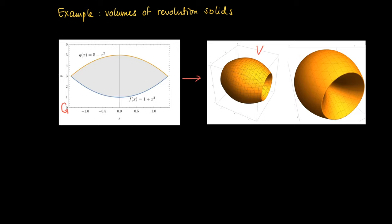We may extend this procedure by taking differences between solids. Here we have a lower graph corresponding to function f and an upper function g. We rotate the area enclosed by those graphs about the x-axis and get a volume depicted on the right-hand side. We want to calculate v, the volume of the revolution solid obtained as a difference of two revolution solids.